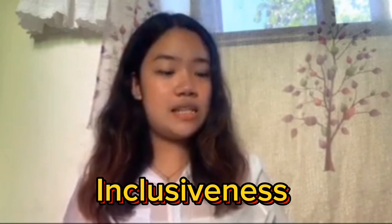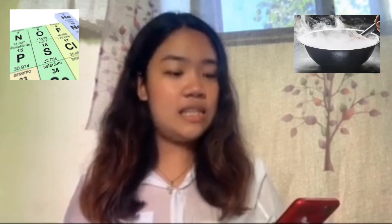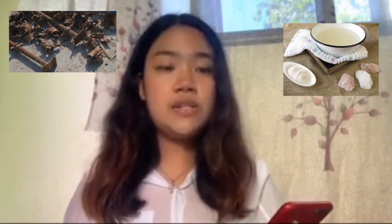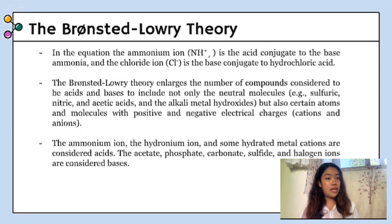What distinguishes the Bronsted-Lowery theory is its inclusiveness. It recognizes not only neutral molecules like traditional acids — sulfuric, nitric, acetic acids — and bases like alkali metal hydroxides, but also ions with positive and negative charges. In this theory, ammonium ion, hydronium ion, and certain hydrated metal cations are considered acids because they can donate protons. On the other hand, ions like acetate, phosphate, carbonate, sulfate, and others are considered bases because they can accept protons.